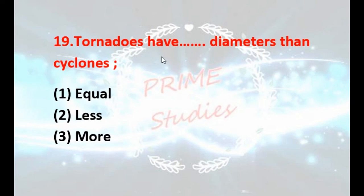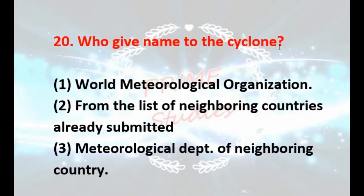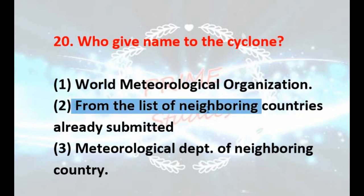Do tornadoes have equal, less, or more diameter than cyclones? They have less diameter. Who gives names to cyclones — the World Meteorological Organization, from a list already submitted by neighboring countries, or the meteorological department of neighboring countries? Your answer is: from the list of neighboring countries already submitted.